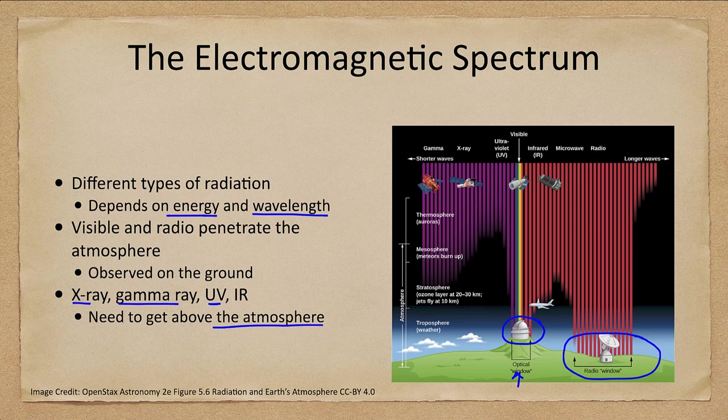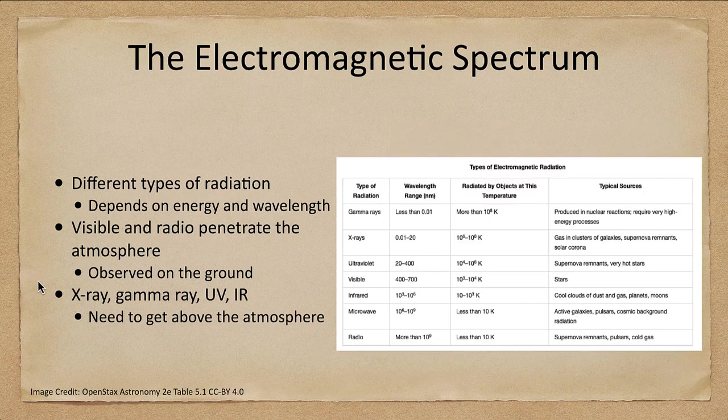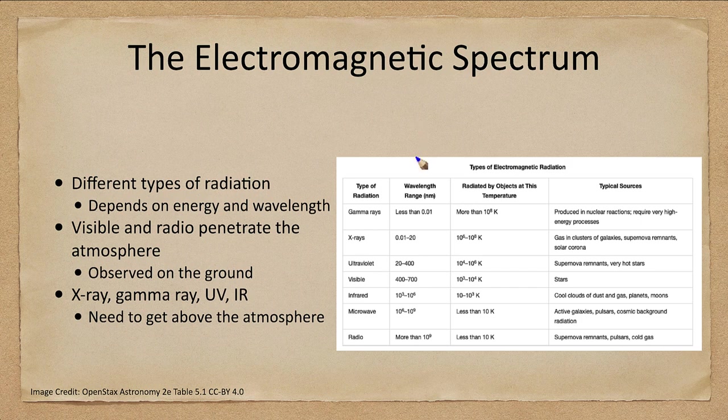Now we can also look at this in a table form. So we see them here and we see what are the wavelengths. This will give you the range of wavelengths in nanometers.